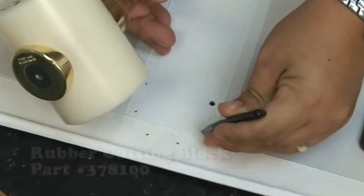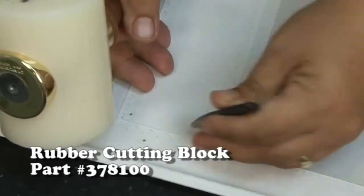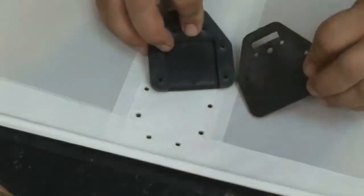As you can see here in the video, all that's necessary is to mark the holes, then use a 1 1/8 inch punch and create the holes for the screws that will be inserted.